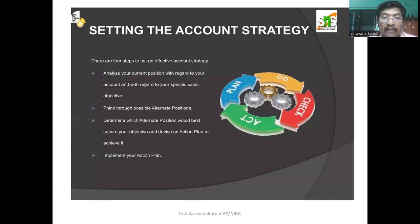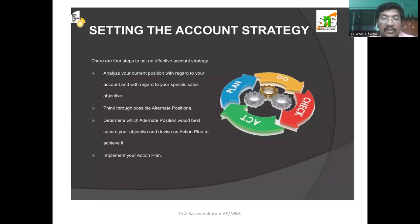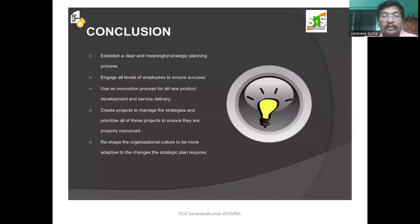Step one: analyze your current position with regard to your account and your specific sales objective — what is your current level of sales? Step two: think through possible alternate positions. Step three: determine which alternate position would best secure your objective and devise an action plan to achieve it. Step four: implement your action plan.